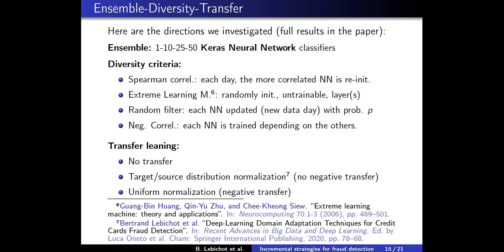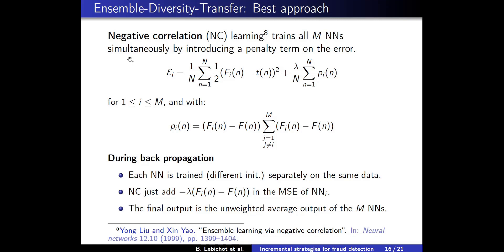I want to present the best approach in more detail. It is a bit different because we learn all the neural networks of the ensemble at the same time using negative correlation learning. This introduces a penalty term on the error of each individual neural network that depends on the outputs of all other networks in the ensemble. When this parameter increases, the outputs are forced to be de-correlated, allowing the ensemble to safeguard more different concepts. We only need to slightly modify back-propagation by adding an extra term in the mean squared error of the corresponding neural network.